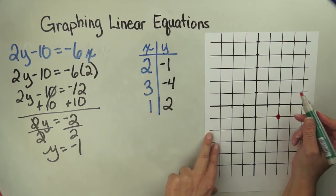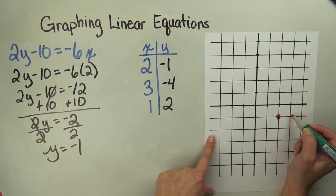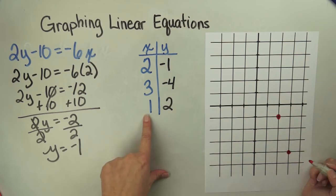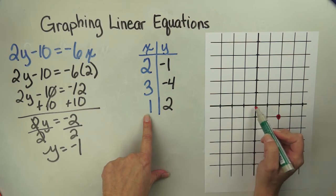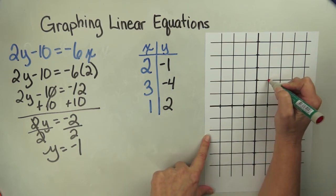3, negative 4 means I go over 3: 1, 2, 3. And negative 4 means I go down: 1, 2, 3, 4. Here I have 1, so it's positive, so I go to the right. And 2 is also positive, so I go straight up.